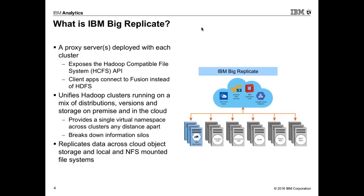How it works is basically a proxy server deployed on each cluster. That cluster could be Azure, S3, OpenStack, Swift, IBM, or Google Cloud — any cluster across your data centers. On all clusters, we deploy a proxy server. It's not a master-slave architecture; it's peer-to-peer connectivity. It is exposed to HCFS — all the file systems compatible with Hadoop — through an HCFS-enabled API. There is a fusion technology through which applications connect to HDFS.